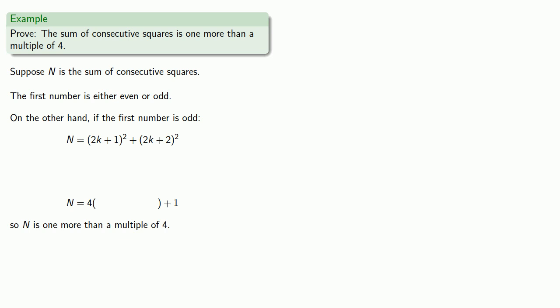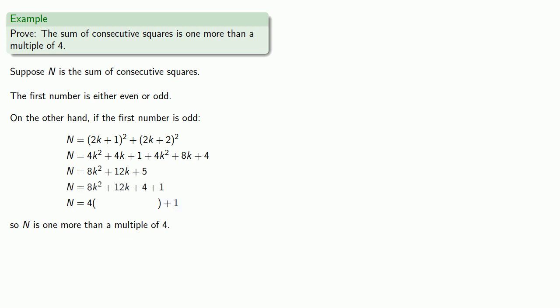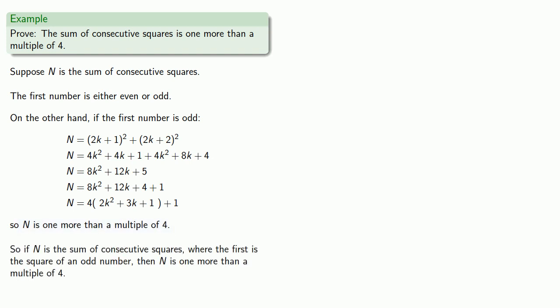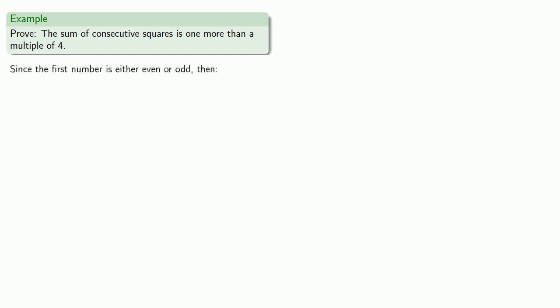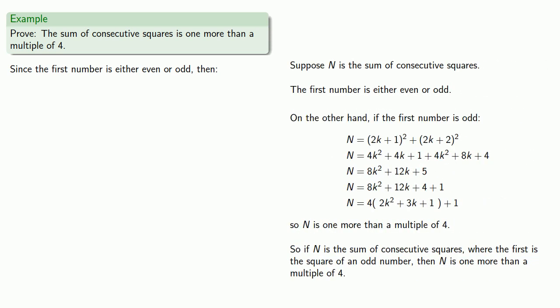We can build our bridge — let's expand our squares and do some algebra. We'd like a plus 1, so let's split that 5 into a 4 plus 1. Here we can rewrite it as 4 times something plus 1. So: if n is the sum of consecutive squares where the first is the square of an odd number, then n is one more than a multiple of four. The first number is either even or odd, and so our two cases include every possibility. We conclude: if n is the sum of consecutive squares, then it is one more than a multiple of four.